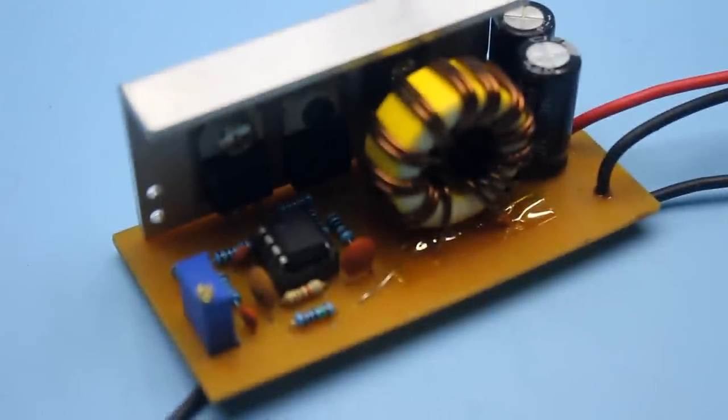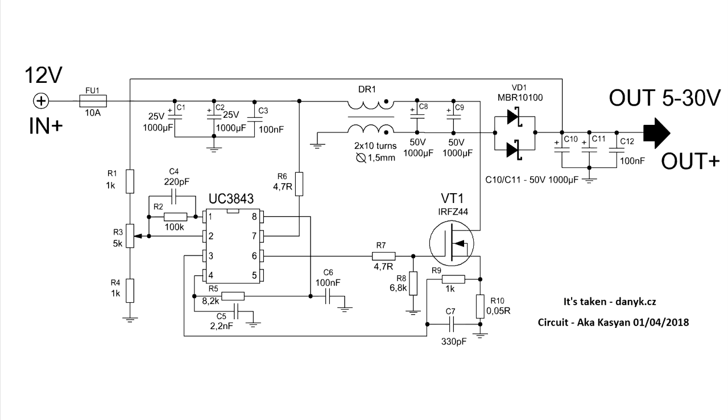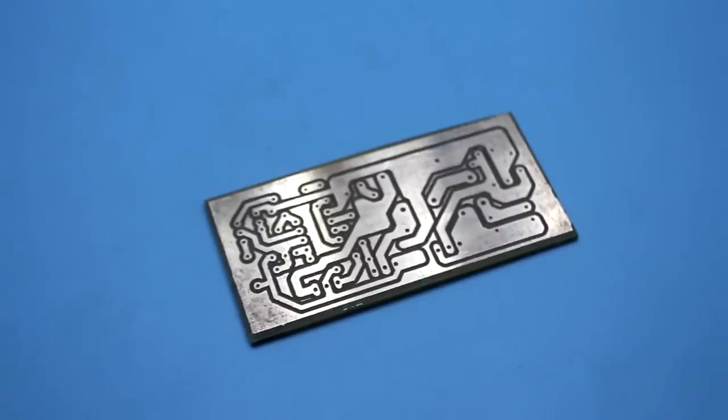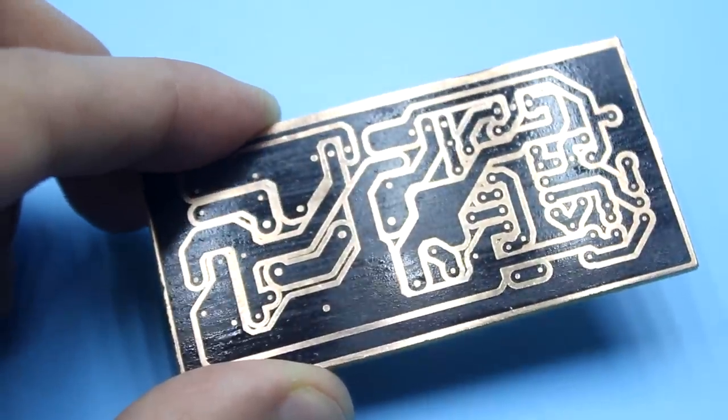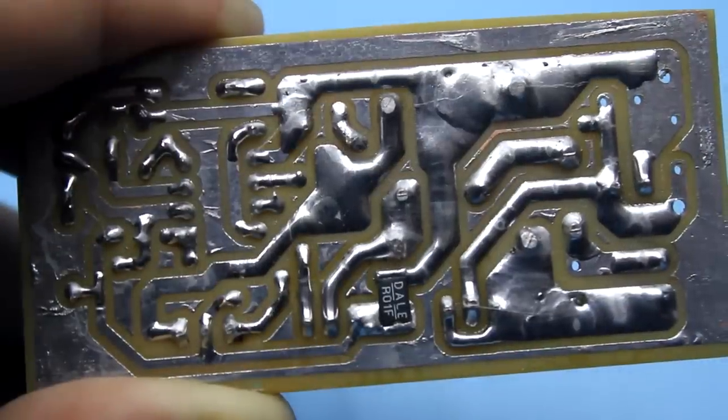Just note one thing. The nominal values of some components on the circuit may differ from those on the board, for example capacitors. The circuit was drawn using standard values of components. I made a board for my needs and preferred primarily compact dimensions.